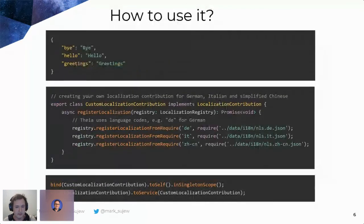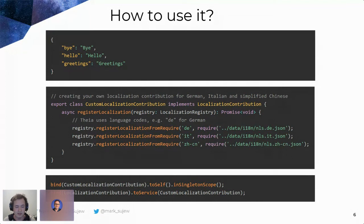Now that you've successfully localized the front end, you need to translate everything. You can run the Theia CLI extract command to create a simple JSON key-value file that contains every key and value you used for the nls.localize function as well as the command translation utility. You can then use any manual or machine translation service to generate different JSON files for different languages.